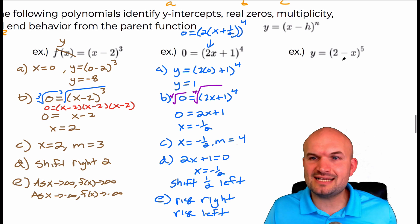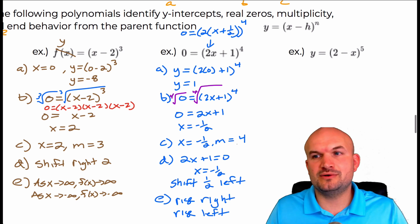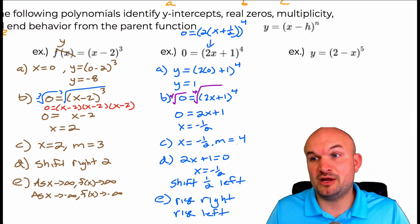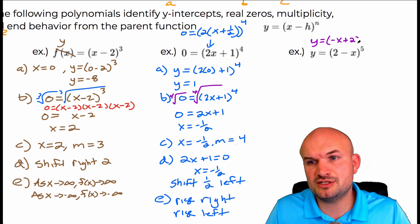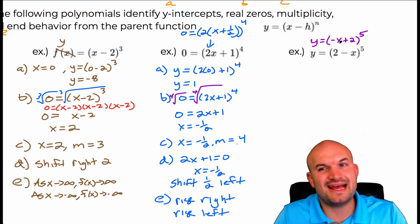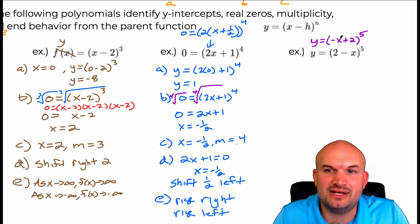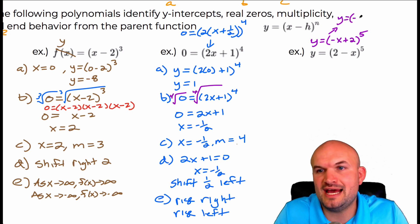In the last example, you can see that x is listed second, so I want to rewrite this in better notation. I'd rewrite it as negative x plus two — the two is positive. You could go one step further: I don't like having that negative there, so let's factor out the b. So y equals negative times x minus two to the fifth.